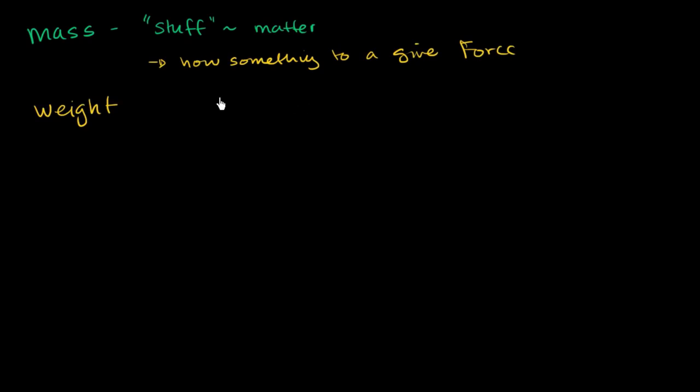Now weight is the force of gravity on a mass, or on an object. So this is the force of gravity on an object. And just to think about the difference here, let's think about myself sitting on Earth.